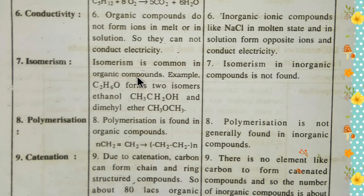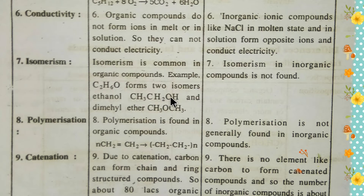The seventh point is isomerism. Isomerism is common in organic compounds. For example, C₂H₆O forms two isomers — one is ethanol and another is dimethyl ether. In the case of inorganic compounds, isomerism is generally not found.